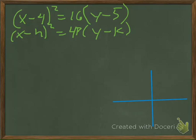Alright, so let's graph a harder one. What are we looking at? We're looking at x minus 4 squared is equal to 16 times y minus 5. We're going to match it up with the preferred form, the one underneath there.